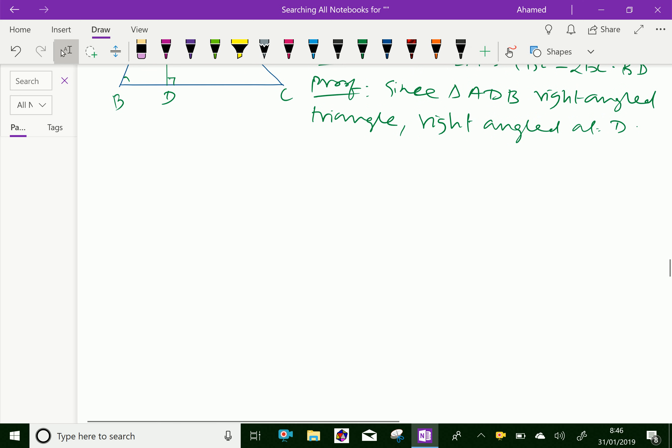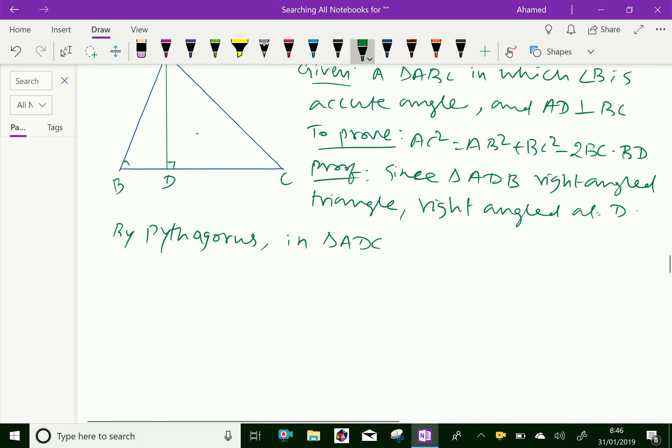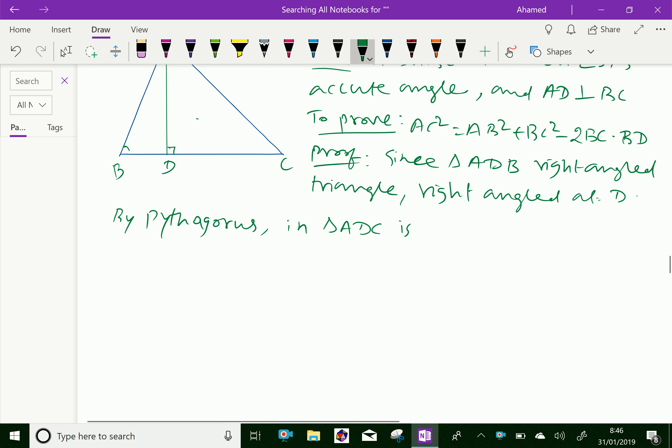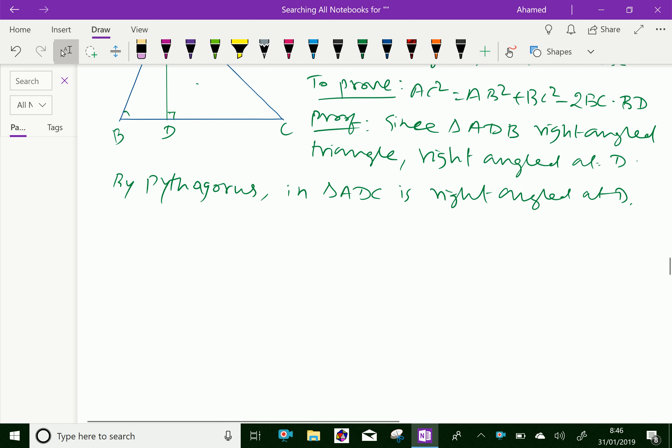By Pythagoras Theorem, in triangle ADC, the triangle ADC is right-angled at D. By Pythagoras Theorem, you can see AC² = AD² + DC².